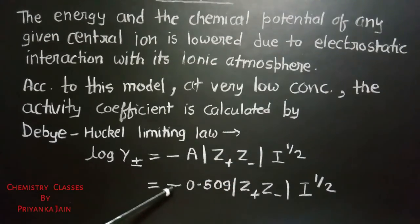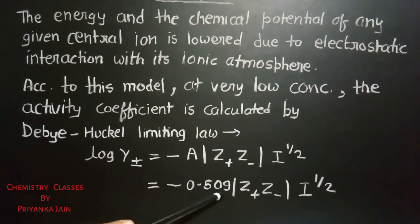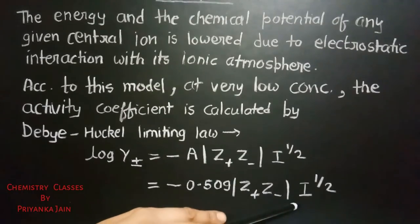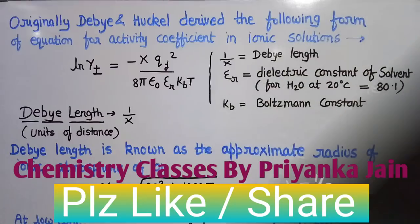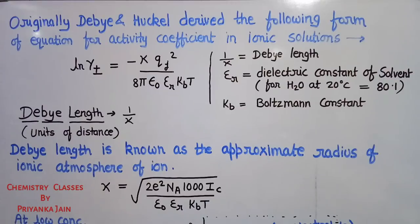For aqueous solution at 25°C, the equation becomes: log γ± equals minus 0.509 times Z₊ times Z₋ times the square root of I. The Debye-Hückel equation is also known as the Debye-Hückel limiting law because it is valid only for very dilute solutions — it cannot be used for concentrated solutions.